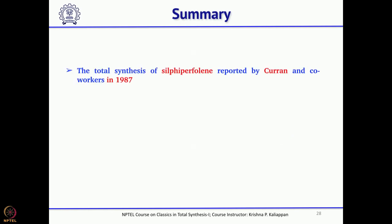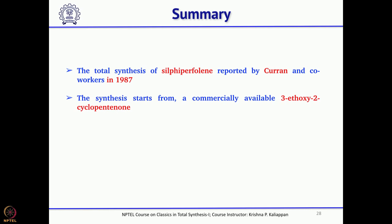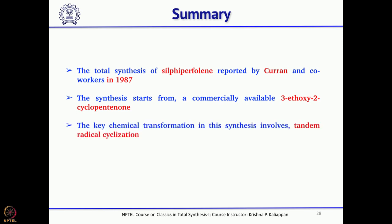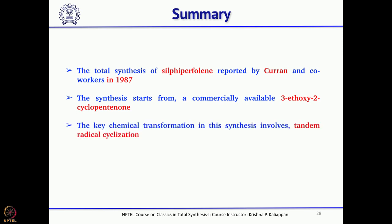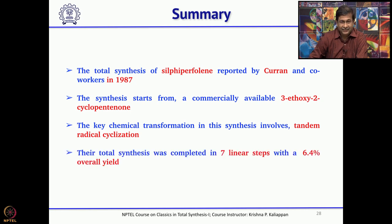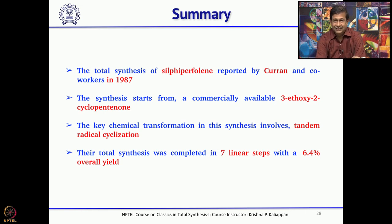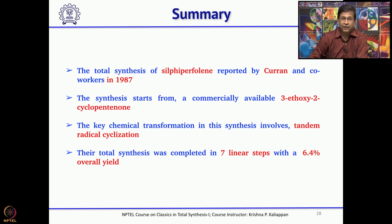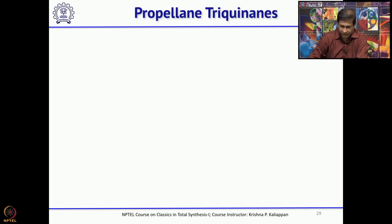In summary, Dennis Curran, who reported this synthesis in 1987, started with cyclopentane-1,3-dione and used tandem 5-exo-trig radical cyclization — as in hirsutene and capnelline — to accomplish the total synthesis of sylviperfoline. Overall, it took about 7 linear steps with a yield of 6.4 percent.